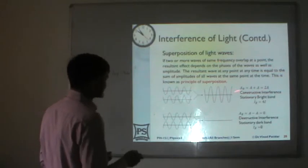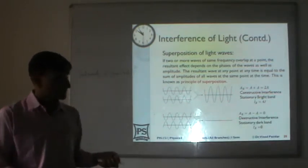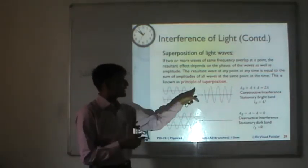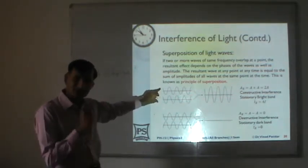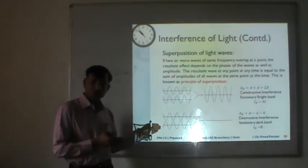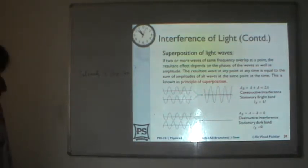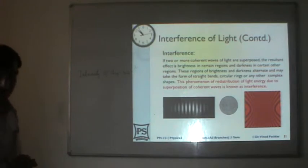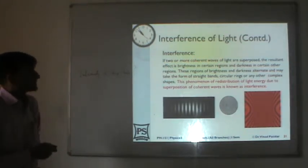For constructive and destructive interference to be sustained, it is required that the two waves maintain the same phase relationship throughout time — their phase difference should always be zero for sustained constructive interference, and always pi for sustained destructive interference. This means these two waves must be coherent. The superposition principle always applies, but a sustained interference pattern only occurs with coherent waves.